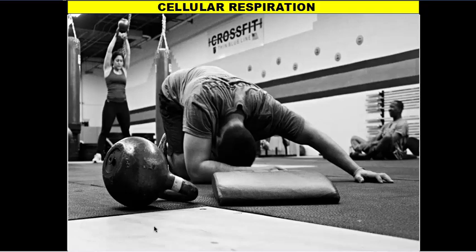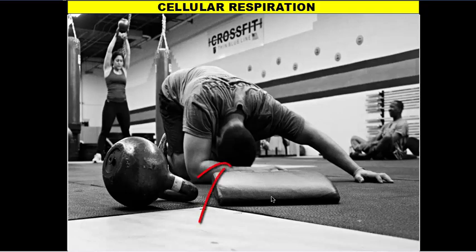If we take a look at our CrossFit gym here, we see three individuals doing three different things. This gentleman on the right is sitting down, talking, stretching, and warming up — cell respiration is providing his body the energy it needs. In the back, this young lady is doing Russian kettlebell swings, and cell respiration is allowing her muscles to contract, her heart to beat, and push blood throughout her body. And here in the foreground, we have this young man who's collapsed on the floor because he's pushed his body to the limits of cell respiration.